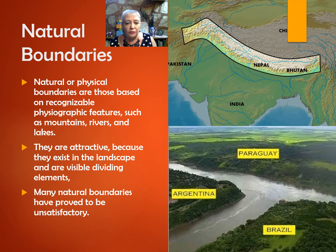Rivers are common boundaries between nations, states, and smaller political units such as counties. The Rio Grande forms a large part of the boundary between Mexico and the United States. The Mississippi River is the defining boundary between many of the states it winds through, including Iowa and Illinois, Arkansas, Tennessee, Louisiana, and Mississippi.